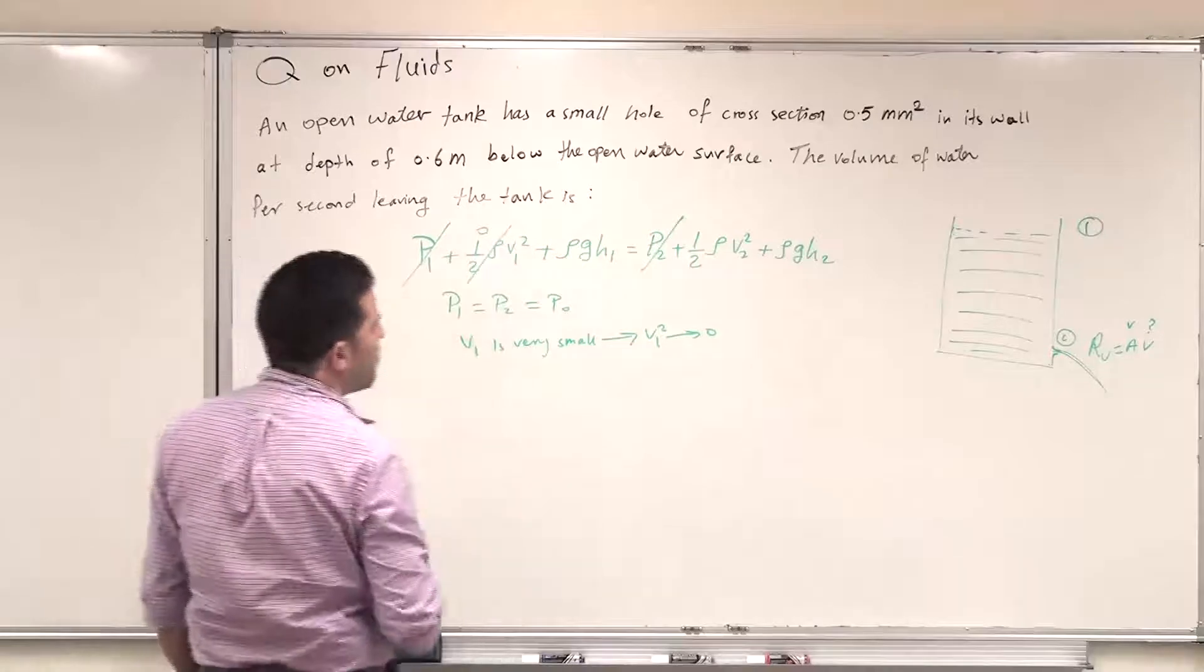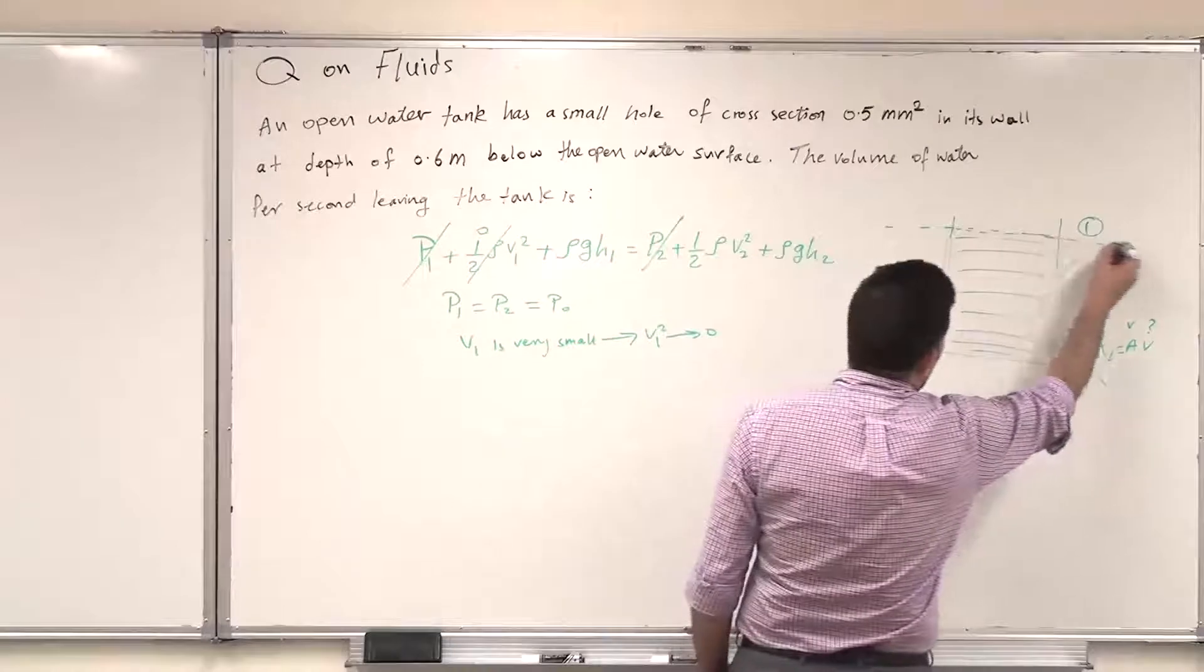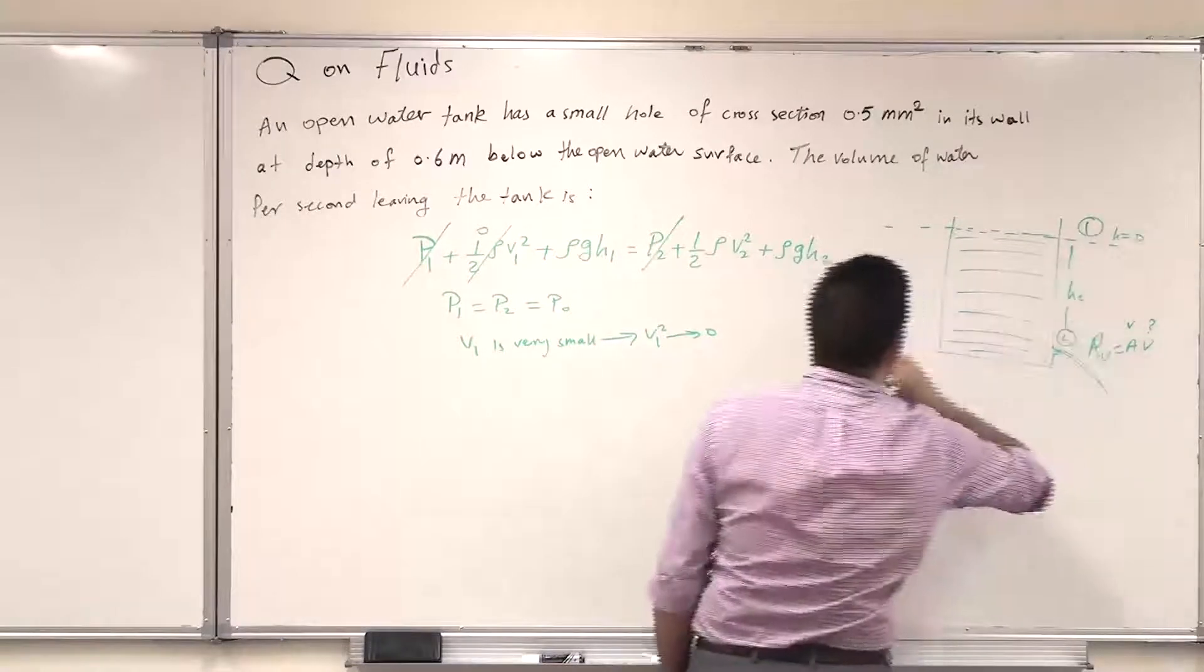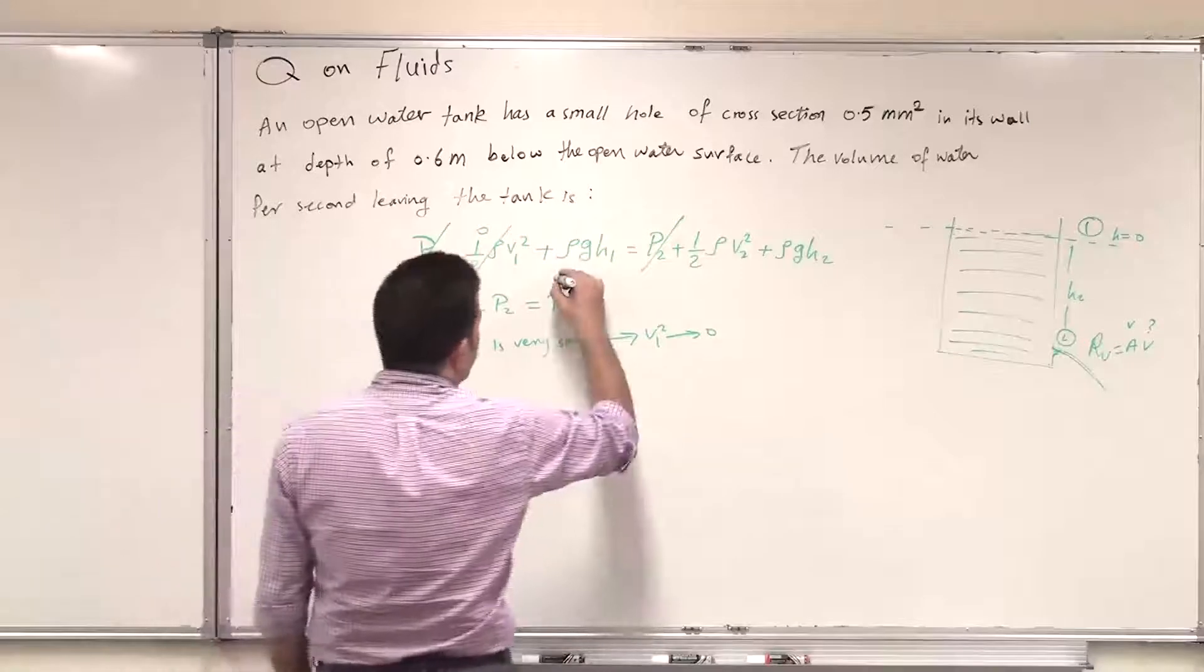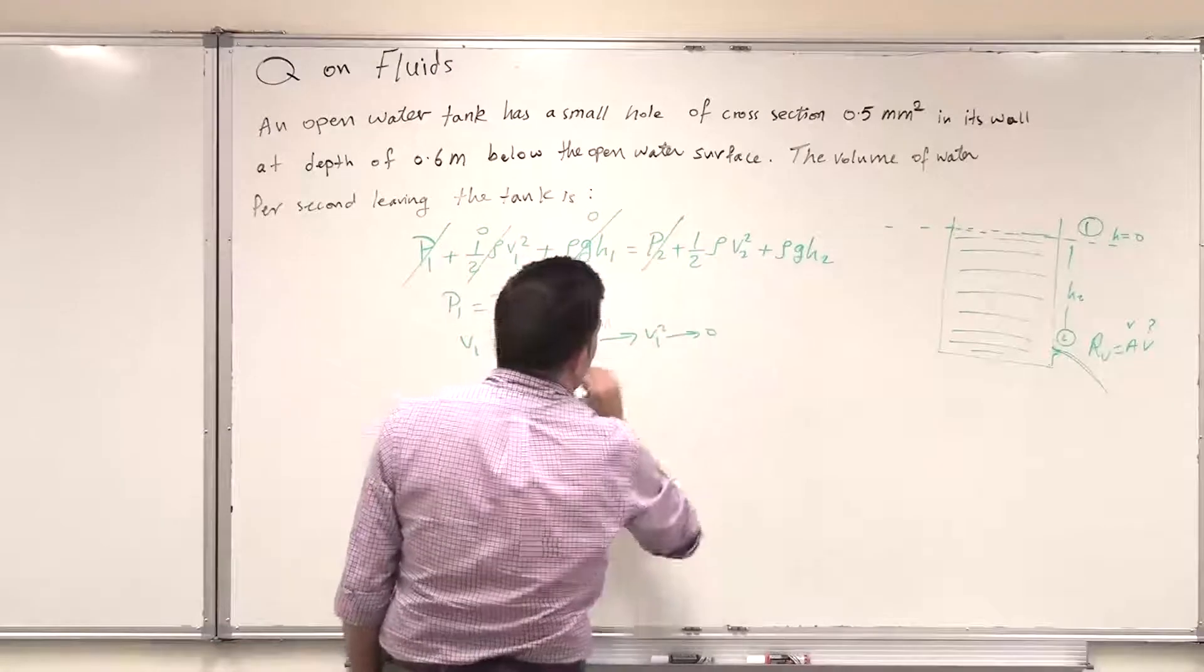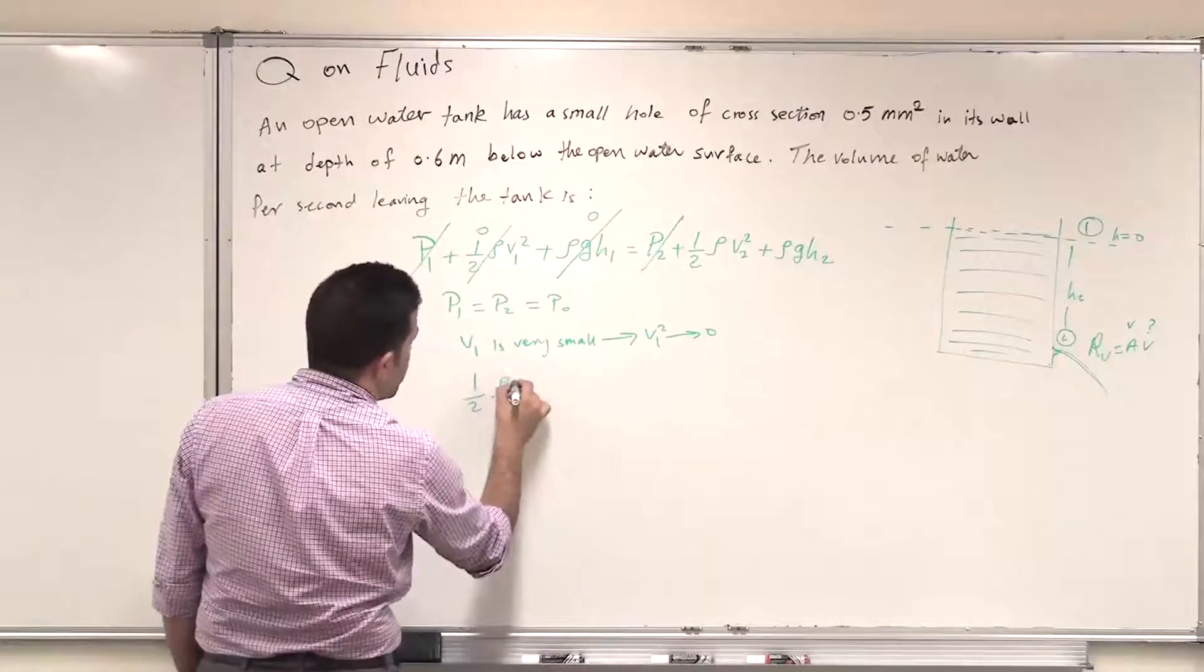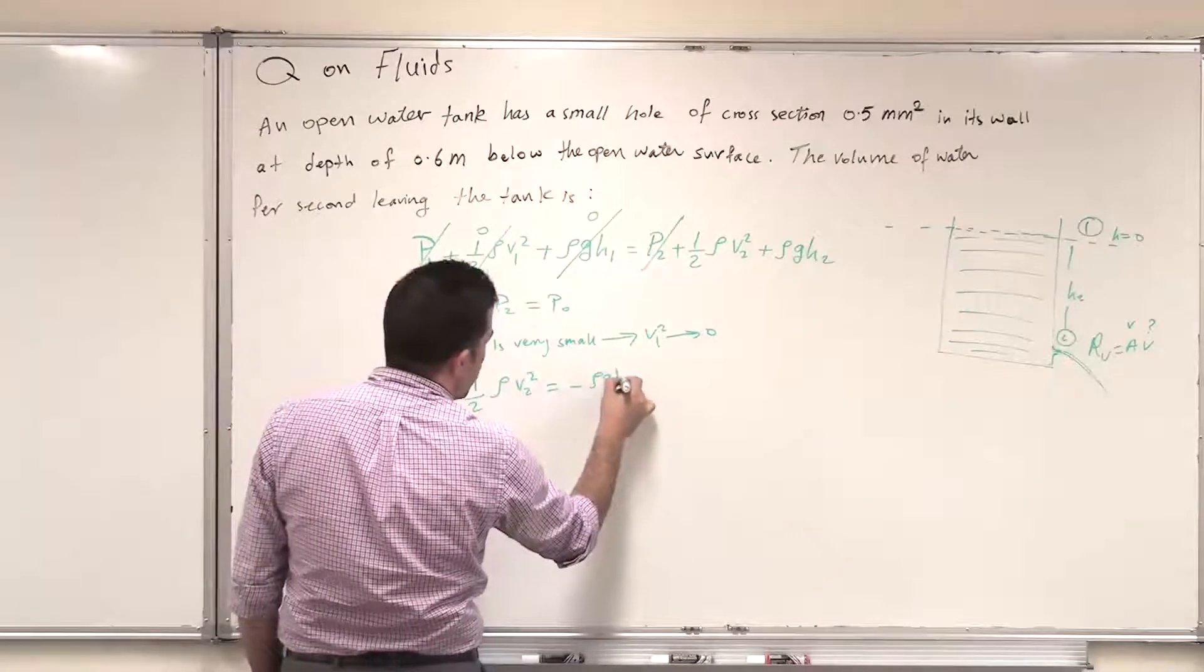And we can take our reference point at P1 to compare the heights. So this is basically H2 where H1 equals 0 so we can say that H1 equals 0 because we're taking the reference point so we're left with these two terms. So these two terms we can now substitute as half rho V2 squared should equal minus rho GH2.